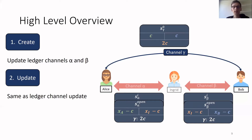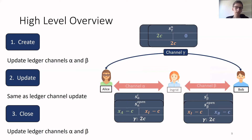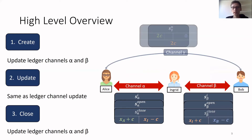This virtual channel can be updated in exactly the same way as a ledger channel. Alice and Bob can simply update the state of this channel among themselves multiple times, until they reach an end state S_gamma_n, where Alice owns all the coins and Bob owns no coins, while Ingrid still has a collateral. In order to close the channel, the parties again update the ledger channels alpha and beta to a new state S_closed, which reflects the latest state of the virtual channel. Alice now has C coins more, Ingrid has C coins less in alpha but C coins more in beta, and Bob has C coins less in beta — exactly the required coin distribution.